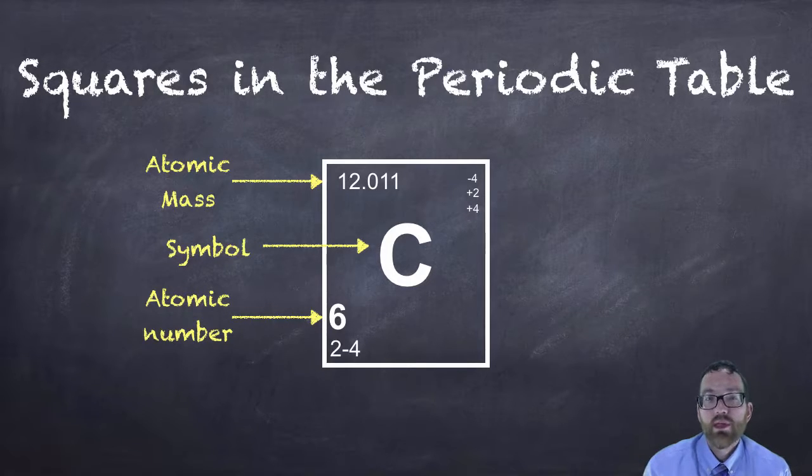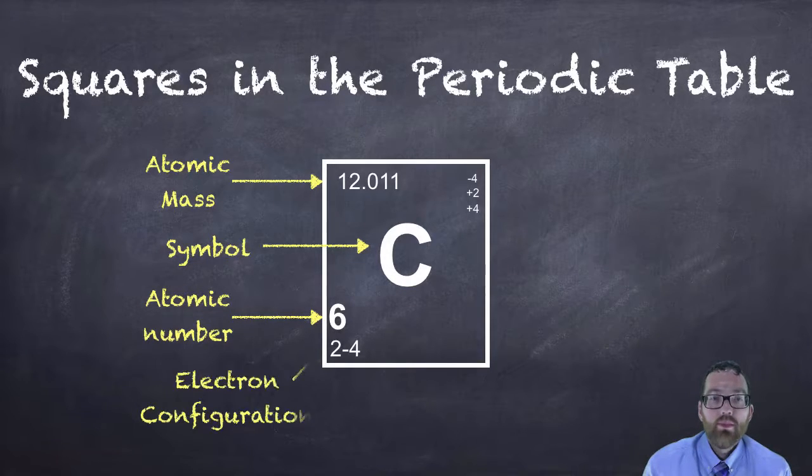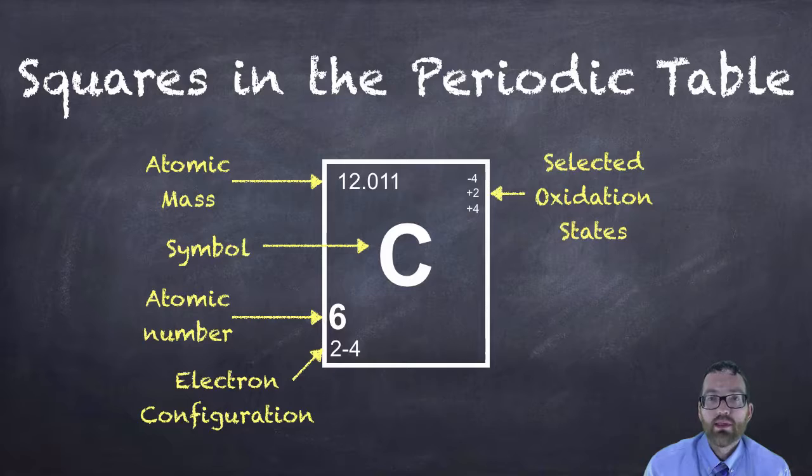On the bottom left hand corner we have the electron configuration. We talked about that in chapter 5. This would be very valuable in knowing how many electrons are in which shells of the atom and how many valence electrons it has. And in the upper right hand corner we have the selected oxidation states. We'll be talking about them a little bit later in the year.